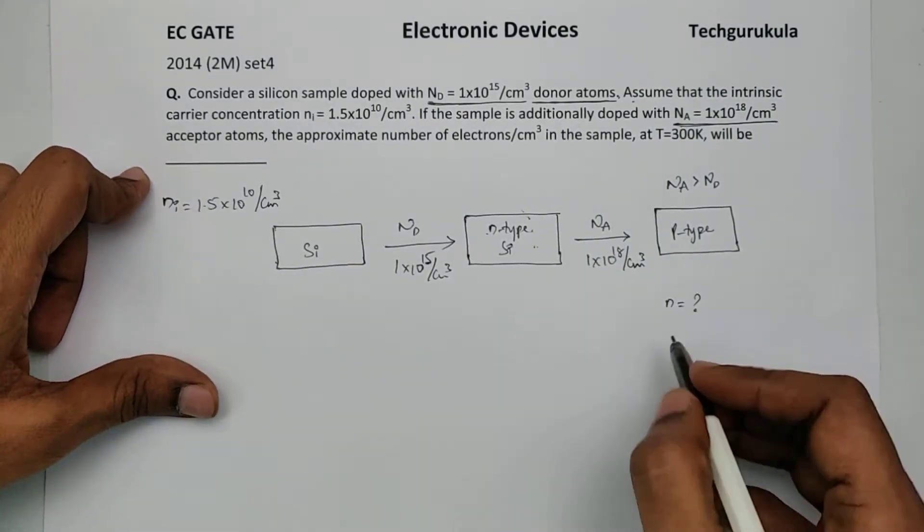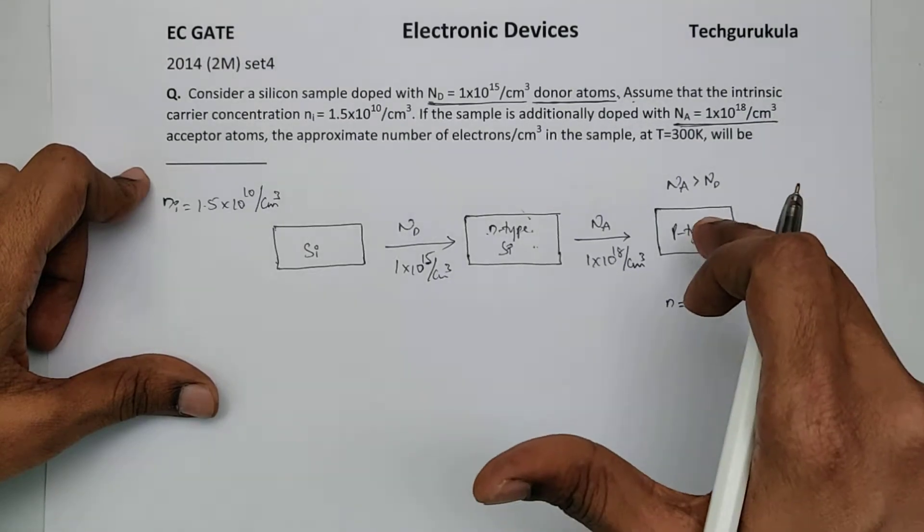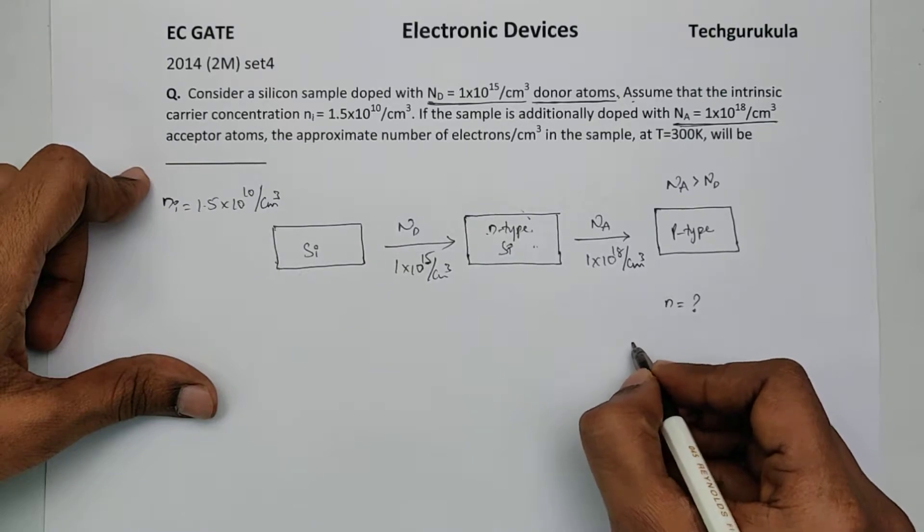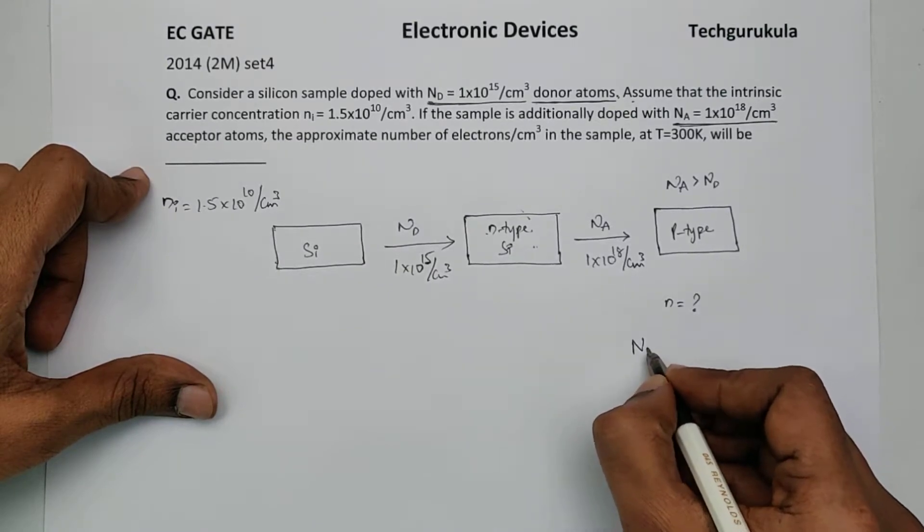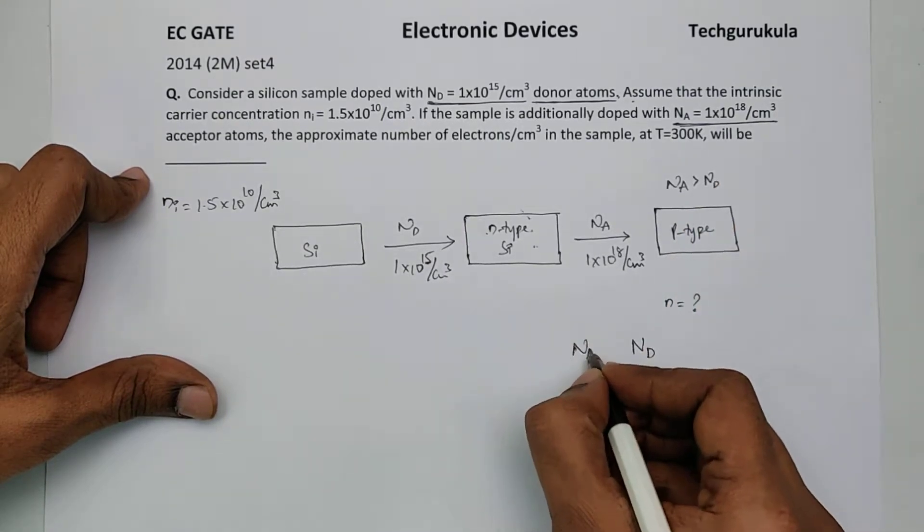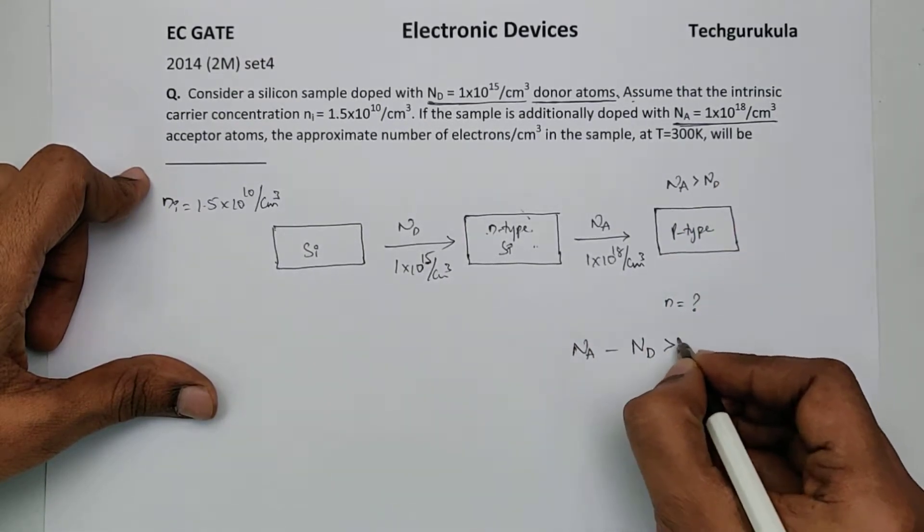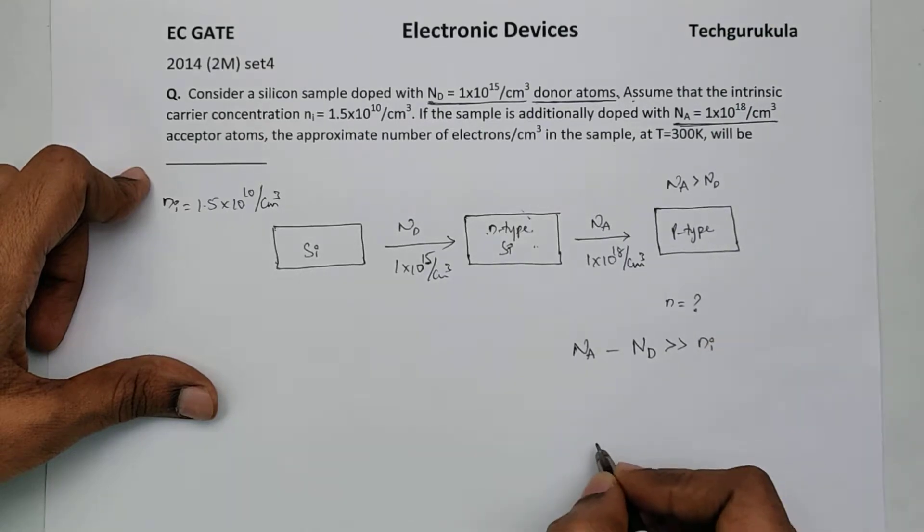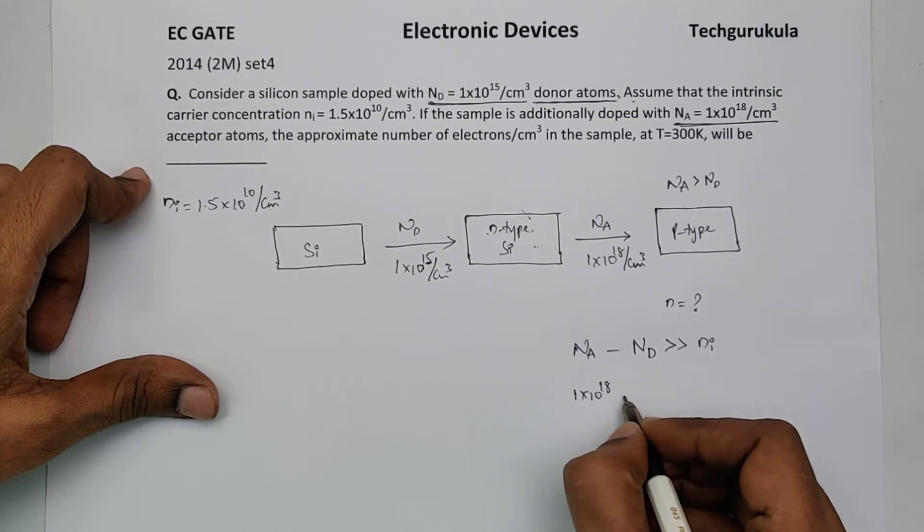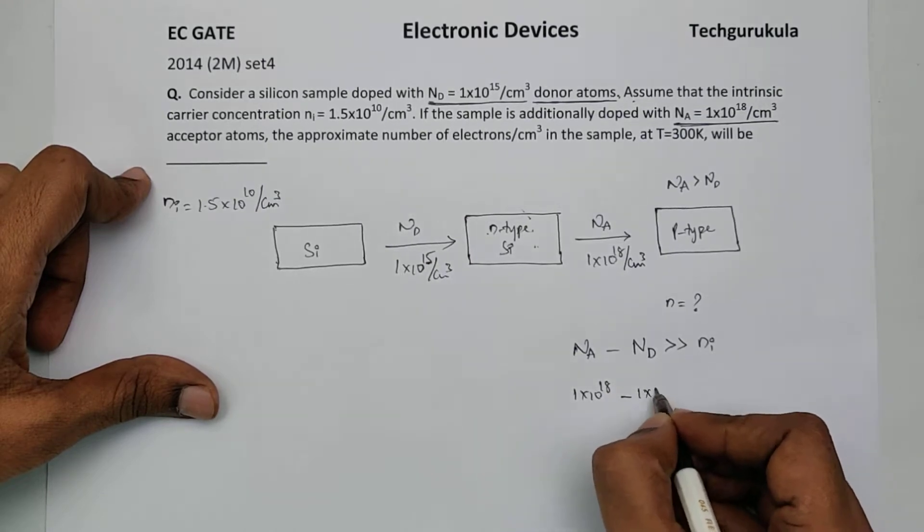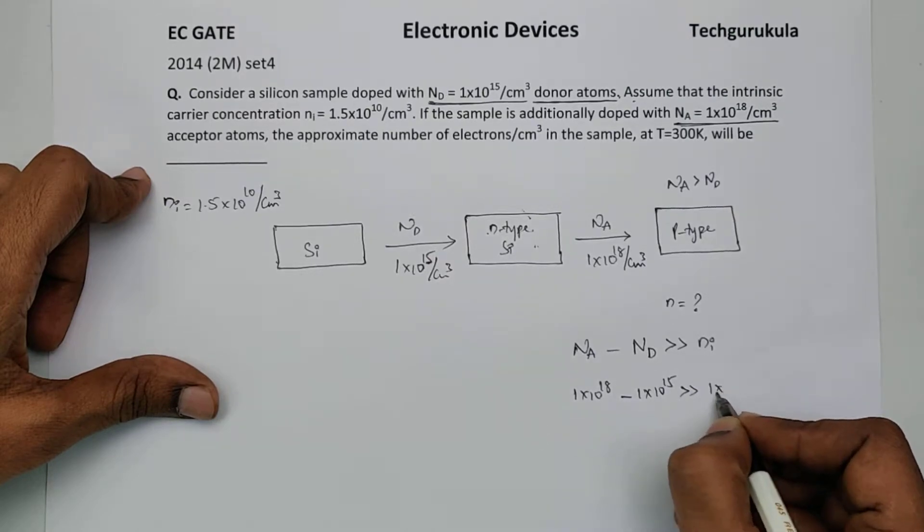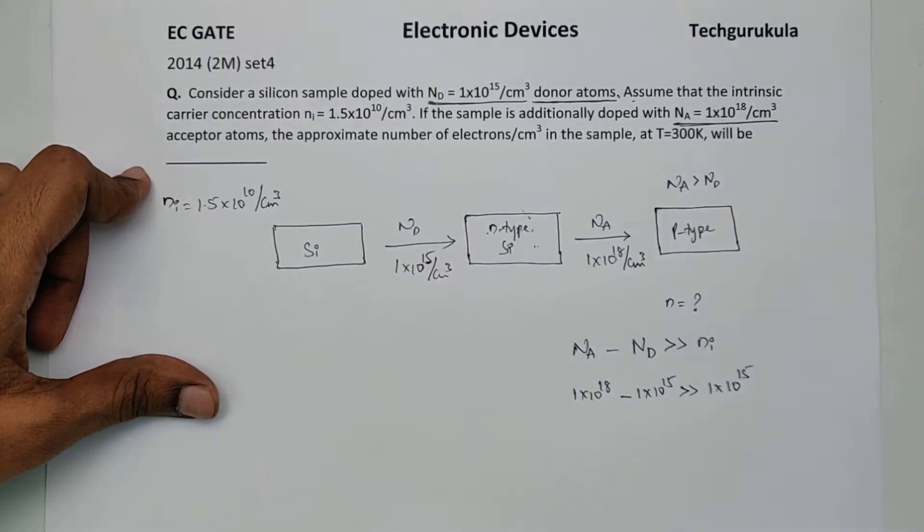To find that, now we have this in compensated doping kind of semiconductor. We have formulas, to apply them we need one condition to be satisfied: Na is greater than Nd, so we have to say Na minus Nd if it is far greater than Ni. Of course that is true in this case: 1 times 10 power 18 per centimeter cube minus 1 times 10 power 15 per centimeter cube is obviously far greater than 1.5 times 10 power 10 per centimeter cube.